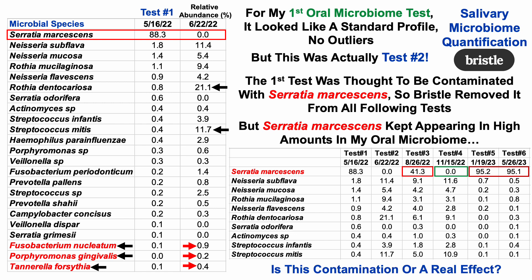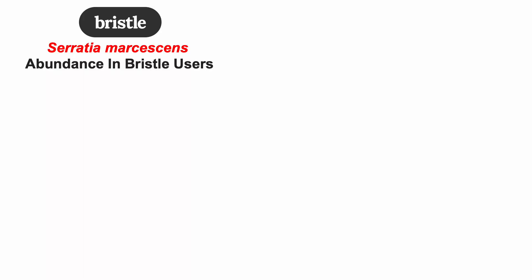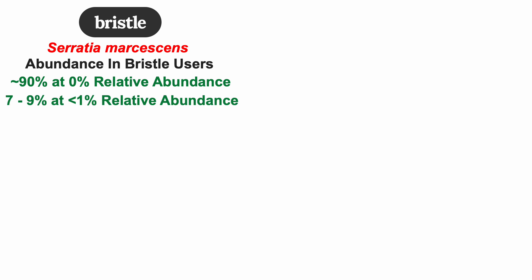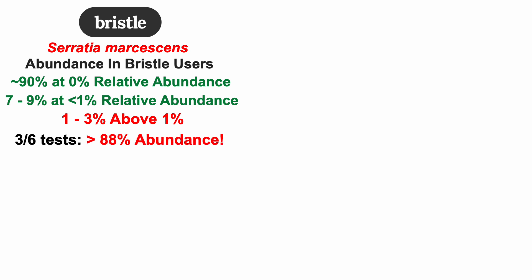So is this contamination or a real effect? I reached out to Bristle and they informed me that within their users, around 90% have absolutely zero of this Serratia species. So if it was a contamination issue, we'd expect greater prevalence in their cohort. About 7%–9% have less than 1% relative abundance, so up to 99% have very low levels. I'm clearly in that 1%–3% that have above 1%, and in three of six tests I have greater than 88% abundance.